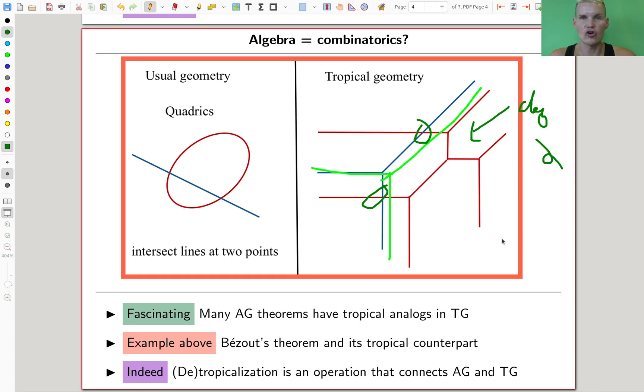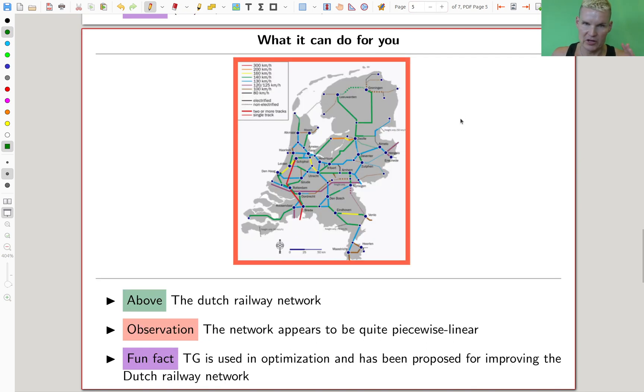And there's an operation which is called tropicalization and an inverse which is called de-tropicalization. And they just go between one of them. And it's really fantastic how you can not just see analog statements in tropical geometry, but you can also use a tropical version sometimes to prove the algebraic version. You should usually think of algebraic geometry as more difficult than tropical geometry, which is like 95% true.